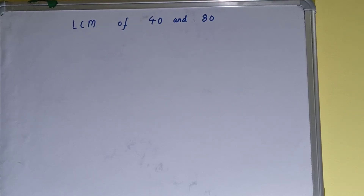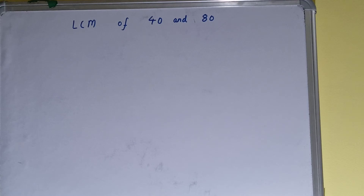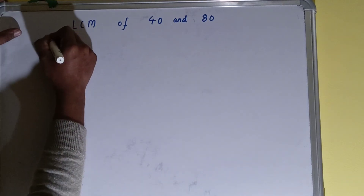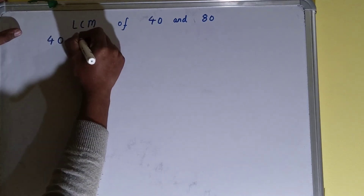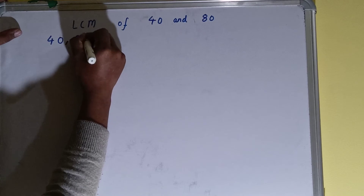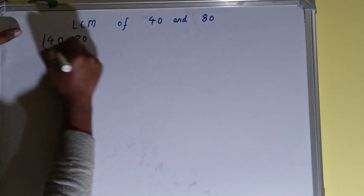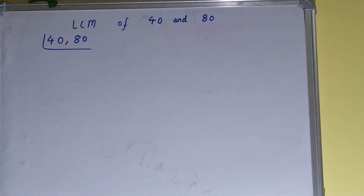Hello friends. In this video I'll be helping with the LCM of the numbers 40 and 80. To find it out, we need to write both numbers like this: 40, 80. The next thing we need to do is start with the lowest prime number, that is 2, and check if any of the numbers are divisible or not.